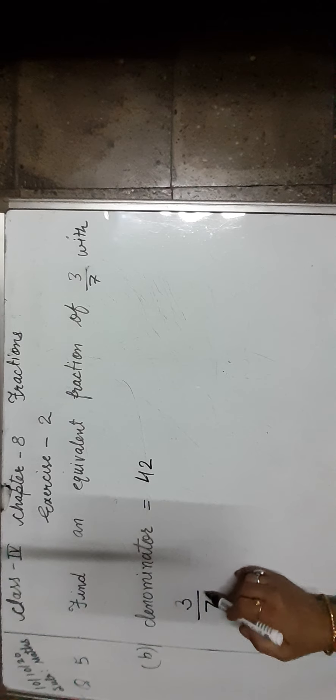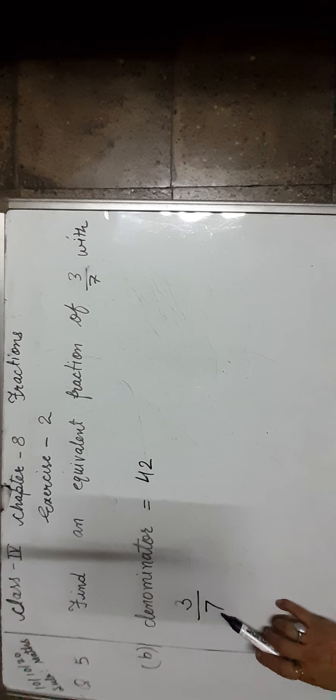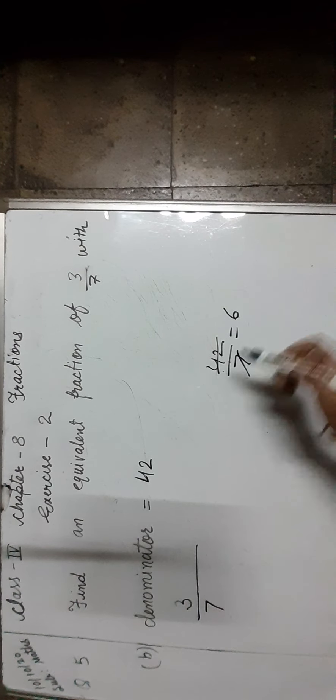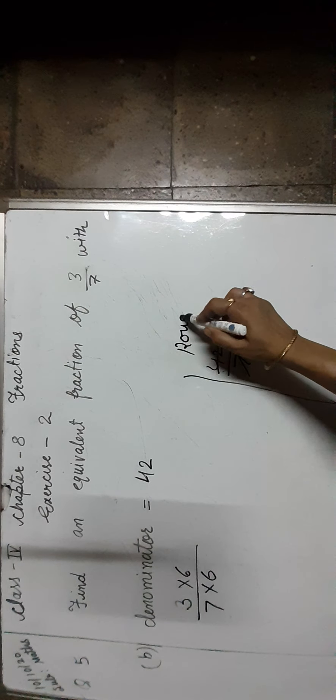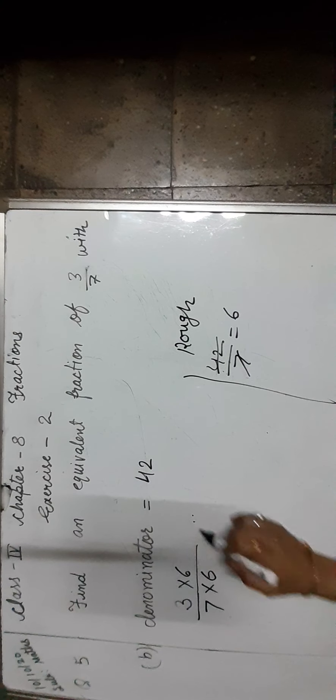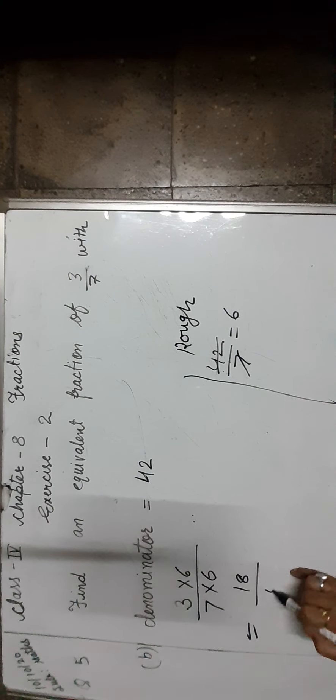Question number 5: find an equivalent fraction of 3 upon 7 with denominator 42. So, let us take the fraction 3 upon 7; 7 is the denominator. How much do we multiply 7 to get 42? 42 divided by 7 gives 6. So we have to multiply both numerator and denominator by 6, and we will get 18 upon 42.